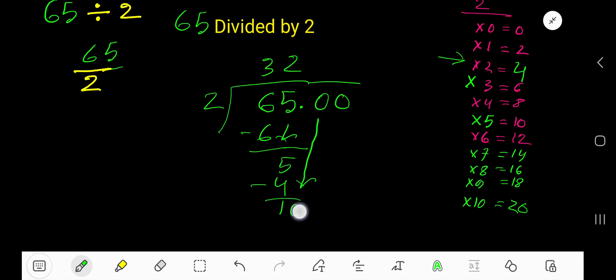Bring down the first zero. 2 goes into 10 how many times? Look here. 5 times. But before this zero, there is a decimal. Decimal must come to the question directly.